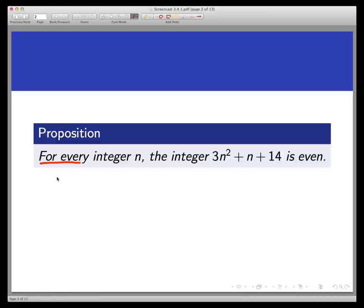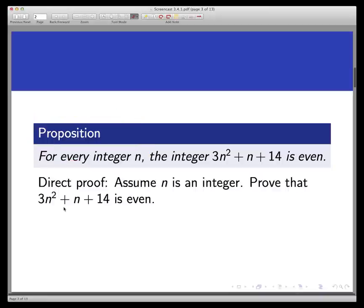Let's try a direct proof of this statement first. This is a universally quantified statement so we can convert it into a conditional statement: if n is any integer then 3n² + n + 14 is even. So with a direct proof the one assumption we could make to begin here is to assume that n is an integer, and then we need to work forward and try to show the conclusion that 3n² + n + 14 is even.